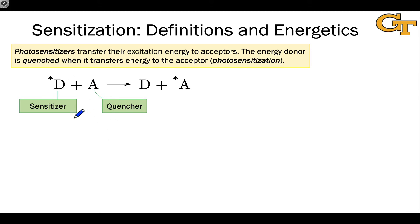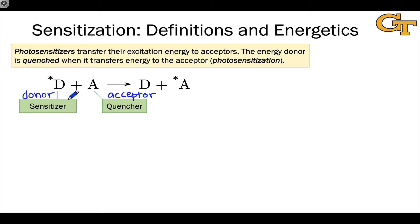It's worth noting that these terms are essentially synonymous with energy donor and energy acceptor. The energy donor is always a sensitizer, and the energy acceptor is always a quencher. It sometimes takes some thought when wading through the literature of photochemistry to sort out these definitions, because you'll see sensitization and quenching talked about in one sector of the literature and energy donors and acceptors in another — but it's really the same underlying energy transfer process.